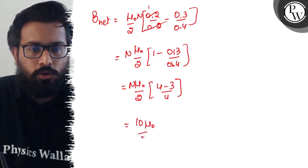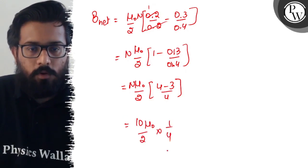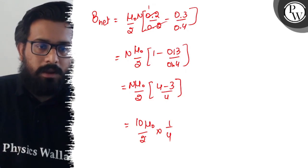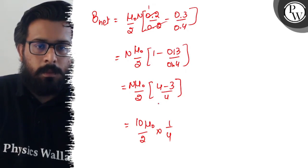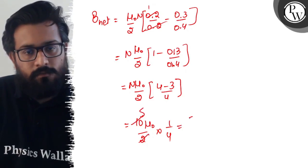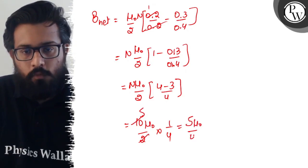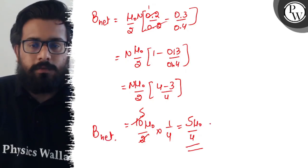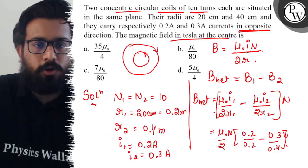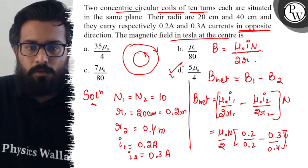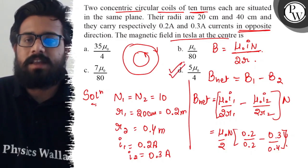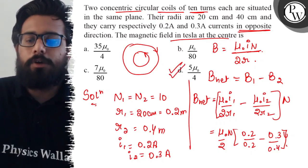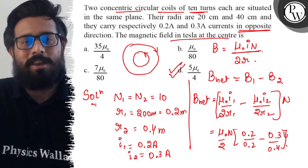So it's 10 times μ₀/2 times 1/4, which comes out to be 5μ₀/4. This is the value of B_net. So once you calculate this part, you will get a value of 5μ₀/4, which is the D option. So your D option is definitely the right one and I hope you got the concept of this question.